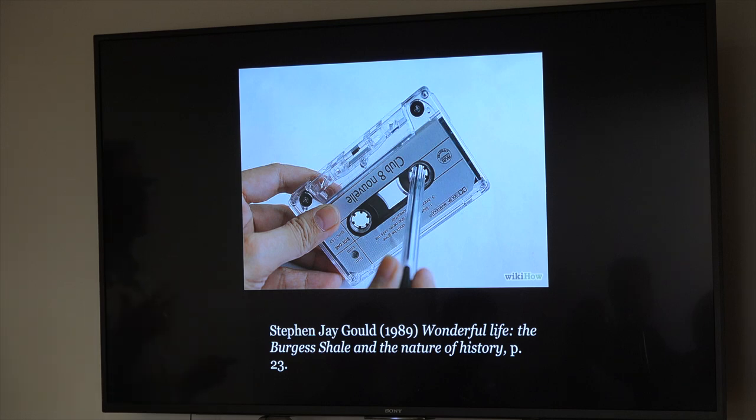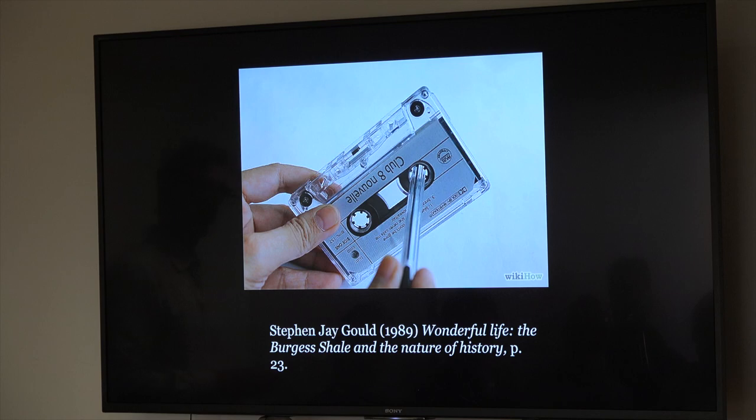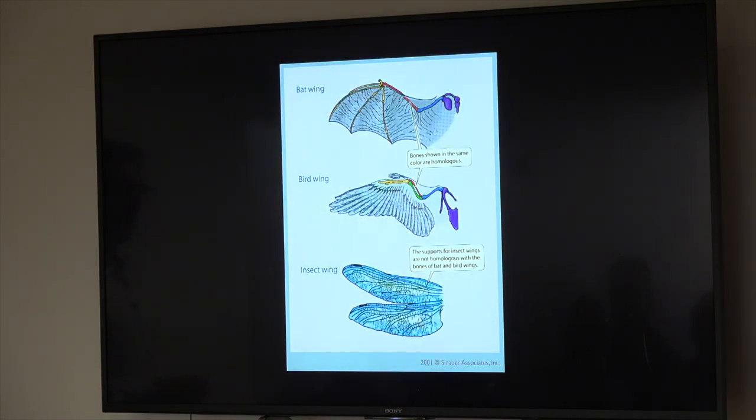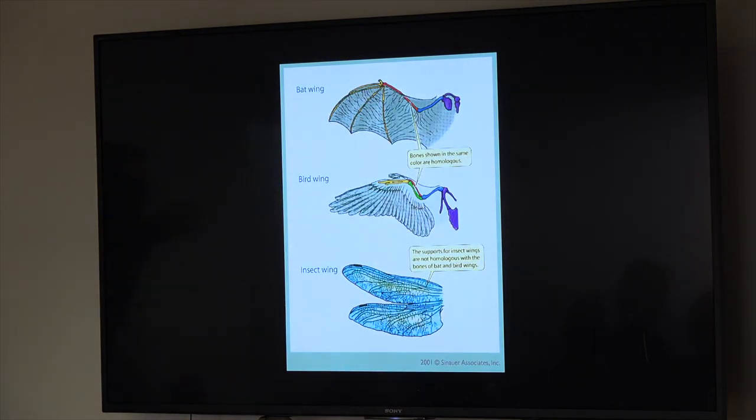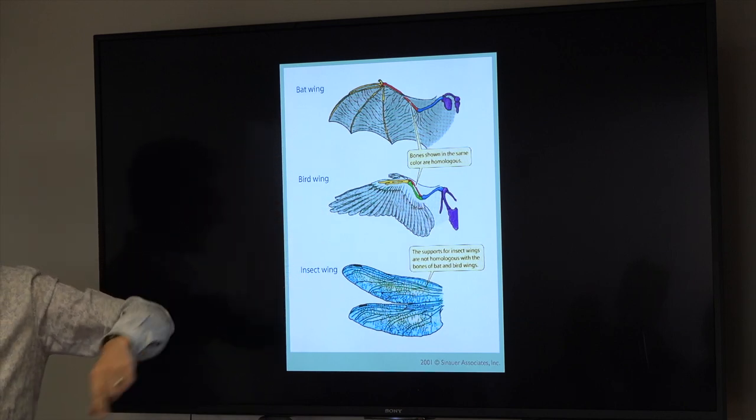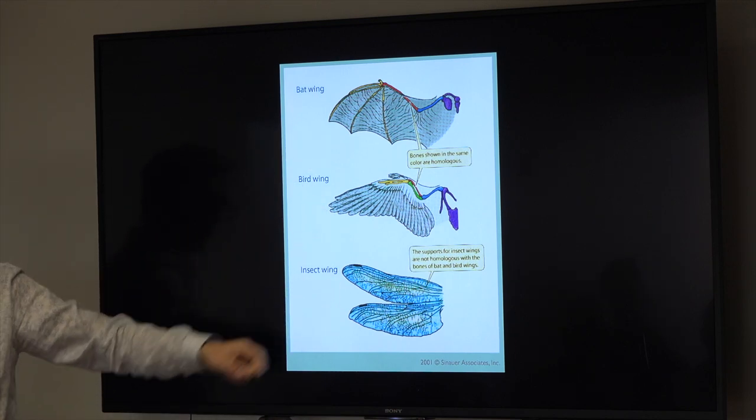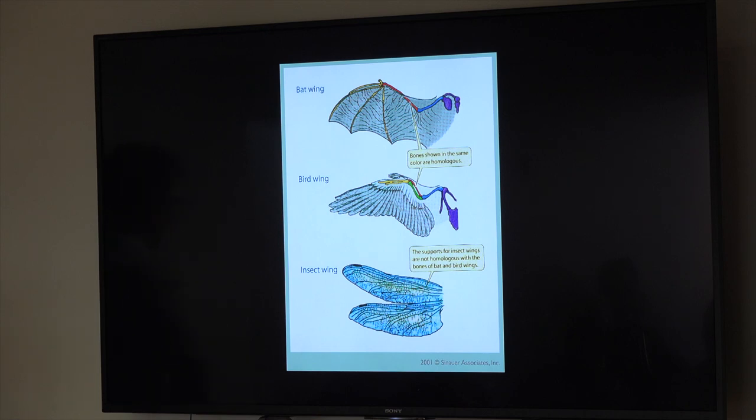For animals belonging to two most distinct lines of descent may readily become adapted to similar conditions and thus assume a close external resemblance. So he's talking about something that is now referred to as convergent evolution which is two different lineages of animals evolving the same structures. And Stephen Jay Gould in 1989 in this nice book called Wonderful Life gave the example, this is called a cassette tape. And he asked the question if you were to rewind the tape of life back to the beginning of life and play it forward again, play evolution forward again, would we end up with similar or different forms was his question.